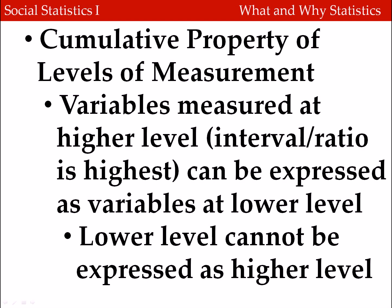These levels of measurement have a specific property called the cumulative property of levels of measurement. We can express a measure that's at a higher level of measurement — like an interval or ratio — as a lower level, like a nominal or ordinal. But we can't go the opposite direction. For example, we can turn years of age into an ordinal measure by defining age ranges: 0 to 5 as one category, 6 to 10 as another, 11 through 15 as another, assigning values 1, 2, 3. Those numbers wouldn't mean anything in terms of actual age, but they're still rank ordered. Any higher level of measurement can be expressed as a lower level, but not vice versa.